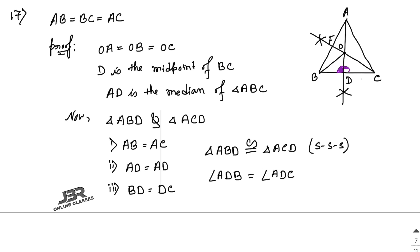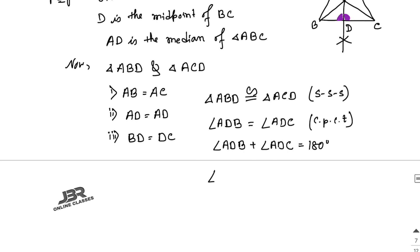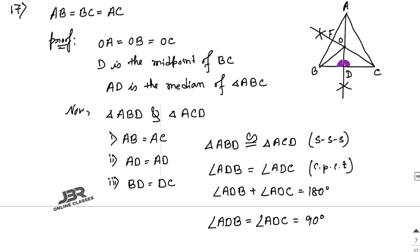Since angle ADB equals angle ADC, and BC is a straight line, angle ADB plus angle ADC equals 180 degrees — so angle ADB equals angle ADC equals 90 degrees. Therefore AD is perpendicular to BC, and passes through O. Hence the centroid and circumcenter of triangle ABC coincide, and it is proved.